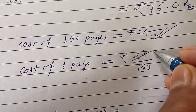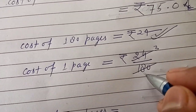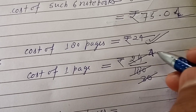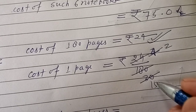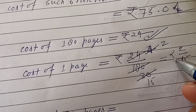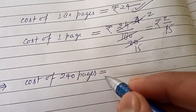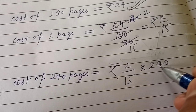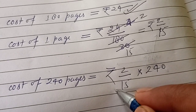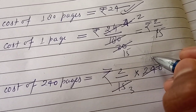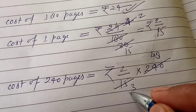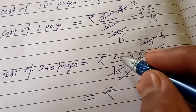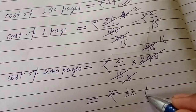Simplifying 24/180: 24 and 8 gives 3; 180 and 8 gives... further simplify: 2/15. So cost of one page is 2/15 rupees. Cost of 240 pages equal to 2/15 into 240. Simplifying: 240/15 gives 16, so 2 into 16 equals 32 rupees. Total cost of 240 pages is ₹32.